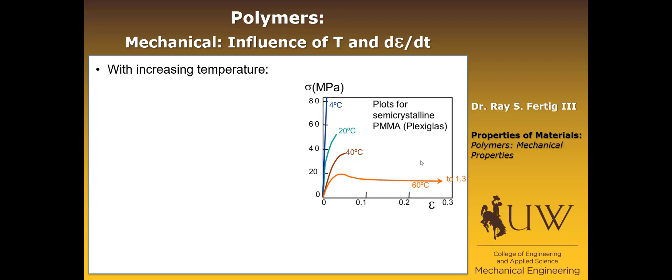So we can kind of look at this curve as an example for polymers in general, but as a general rule, with increasing temperature, our modulus will decrease, our strength is going to decrease, but our elongation to failure is going to increase.